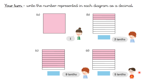Let's look at the answers. Part b: three tenths written as a decimal is 0.3. Nine tenths is 0.9. And five tenths is 0.5.